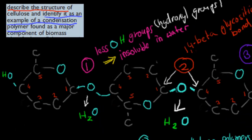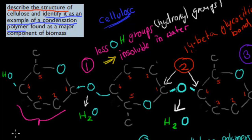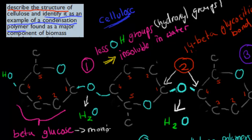There are a couple of different things we need to know about cellulose. These monomers have joined up to form part of a cellulose molecule — so this whole thing here is cellulose. Cellulose is a polymer made of monomers, and the monomers are called glucose, or more specifically beta-glucose. Alpha-glucose makes starch, and beta-glucose makes cellulose.